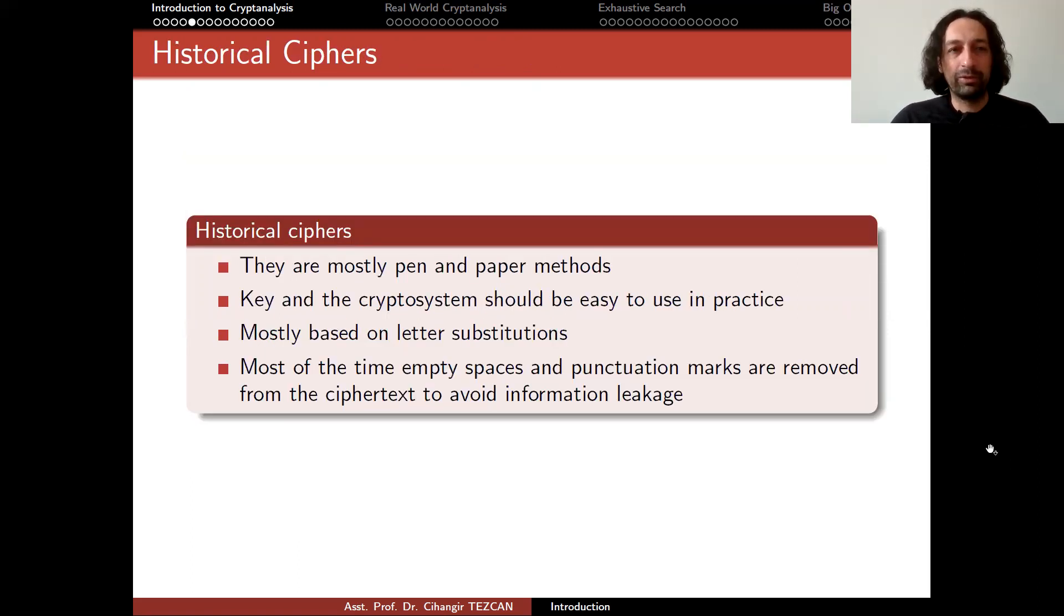Let's see how historical ciphers work, and let's see a few examples and see how we can break them. Historical ciphers are mostly pen and paper methods, because you don't have the technology to use anything else. Key and the cryptosystem should be easy to use in practice. Anybody who knows how to read and write should be able to perform encryption and decryption. These are mostly based on letter substitutions. Most of the time, empty spaces and punctuation marks are removed from the ciphertext to avoid information leakage.